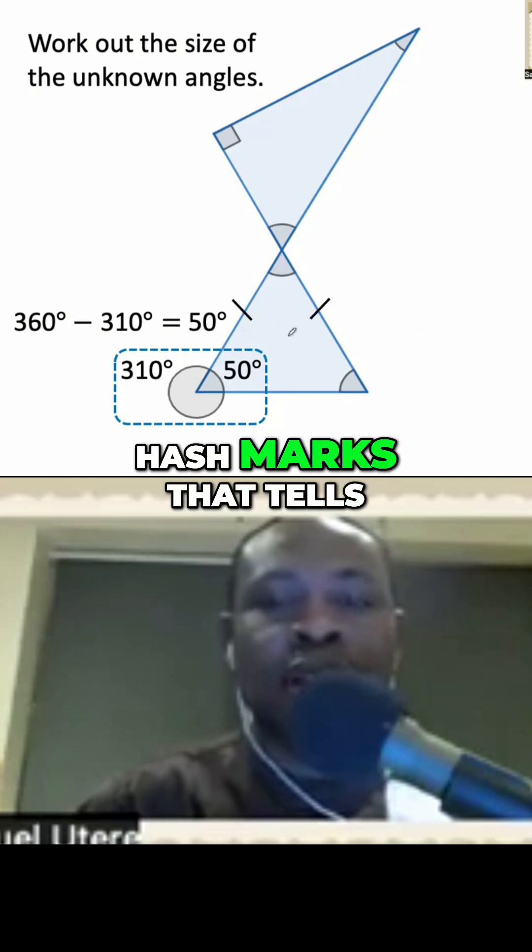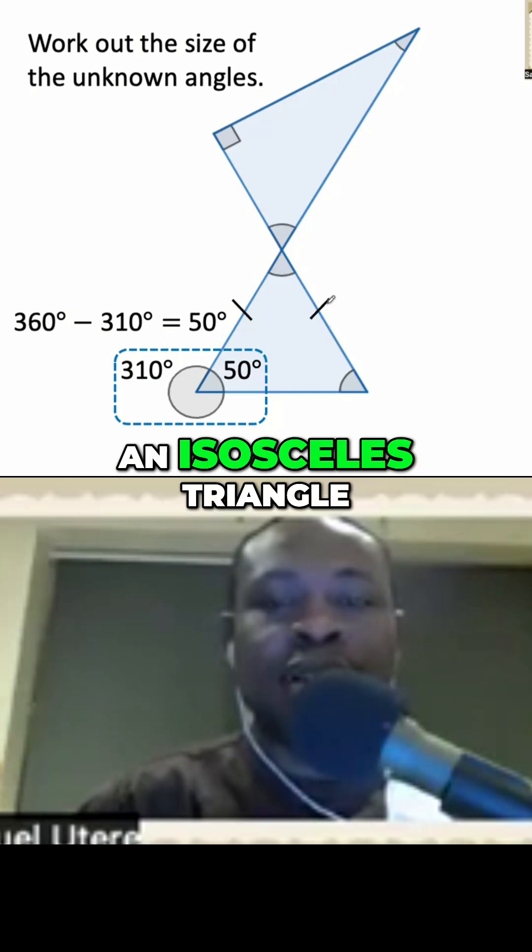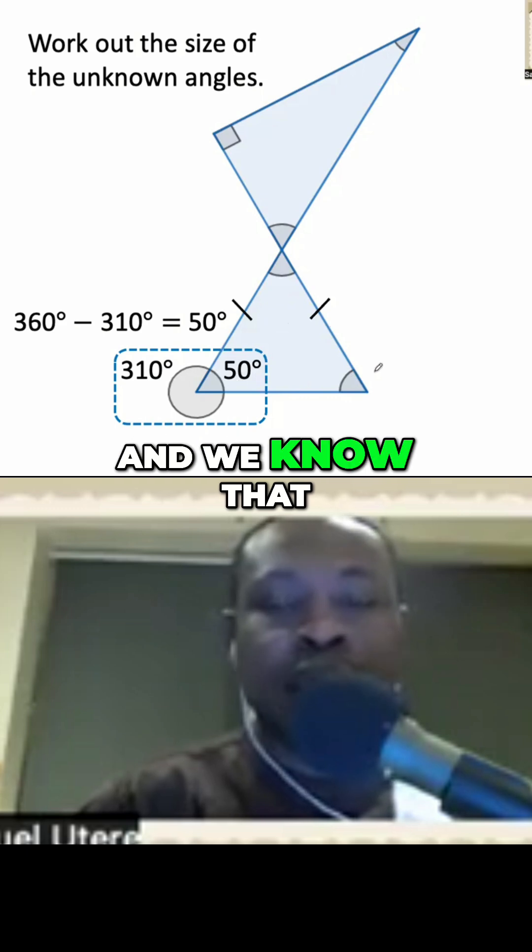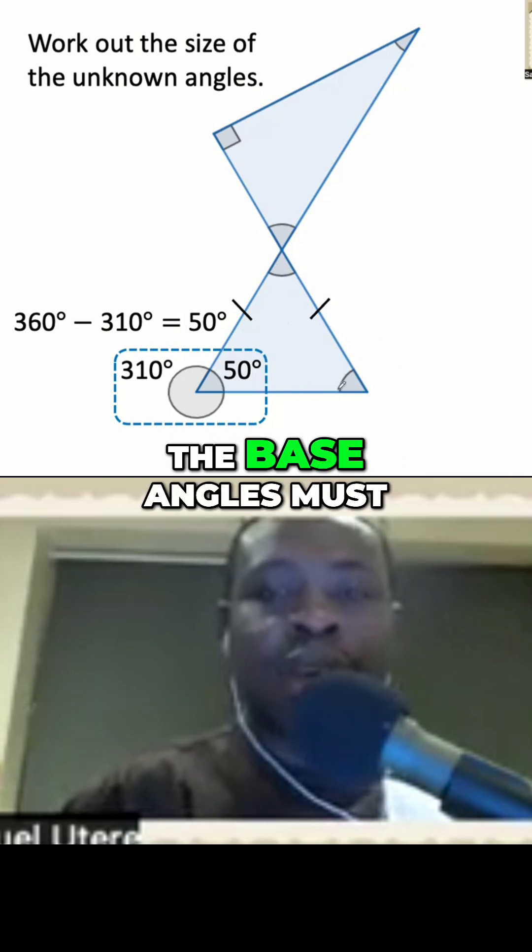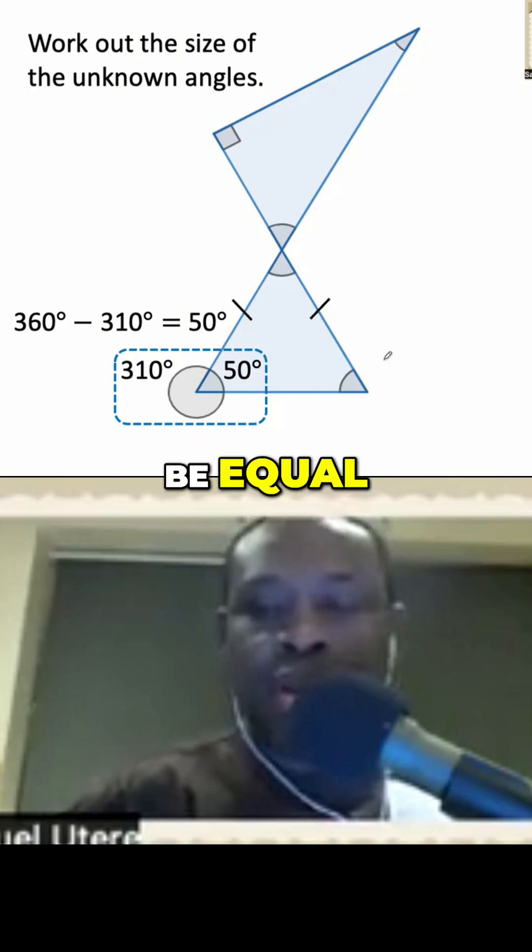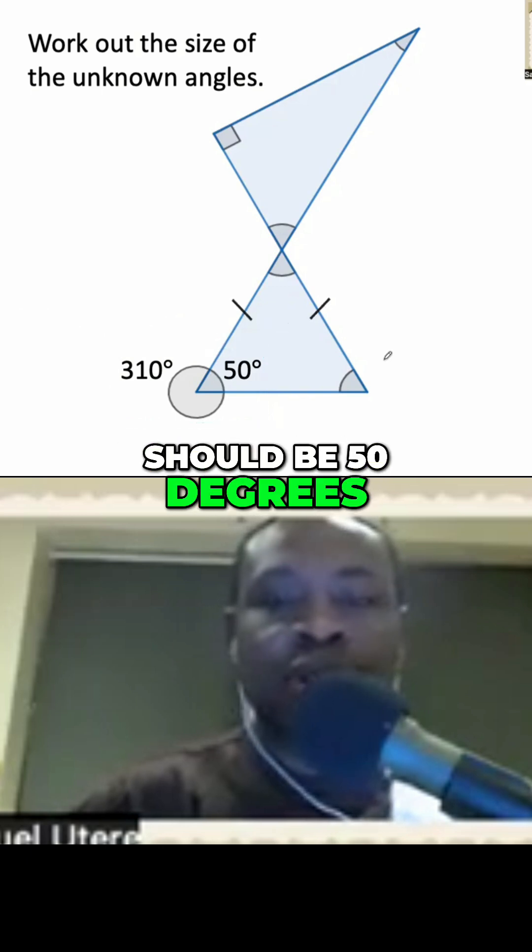We can see these hatch marks that tell us this is an isosceles triangle. And we know that for isosceles triangles, the base angles must be equal. So that angle should be 50 degrees as well.